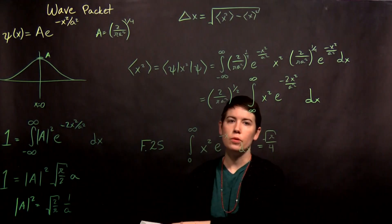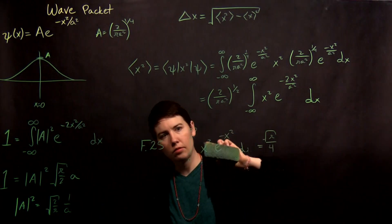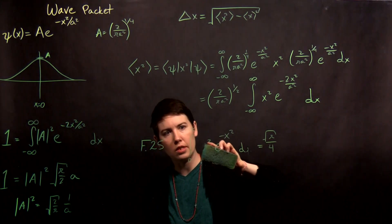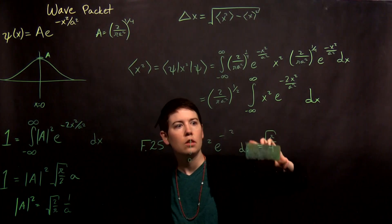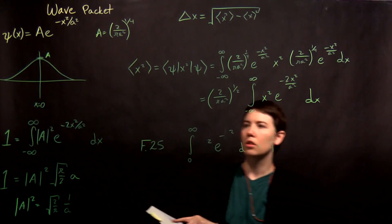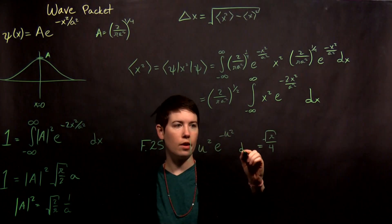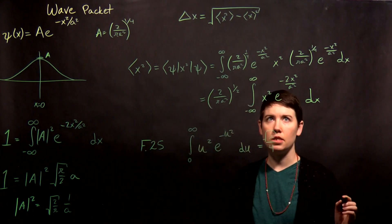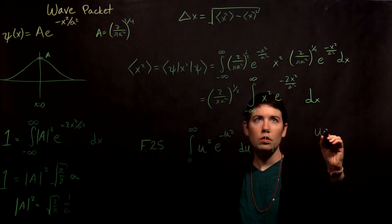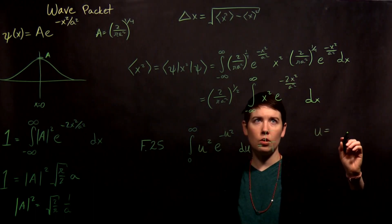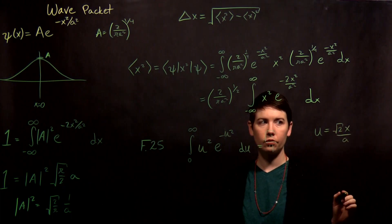So one thing that might help is to do a little bit of a u substitution. So let's call this instead, I like explicitly writing things differently to not confuse myself. So if we wrote this instead as u squared e to the minus u squared du, now we can see that I can say that u equals, in this case it would be square root of 2 x over a.